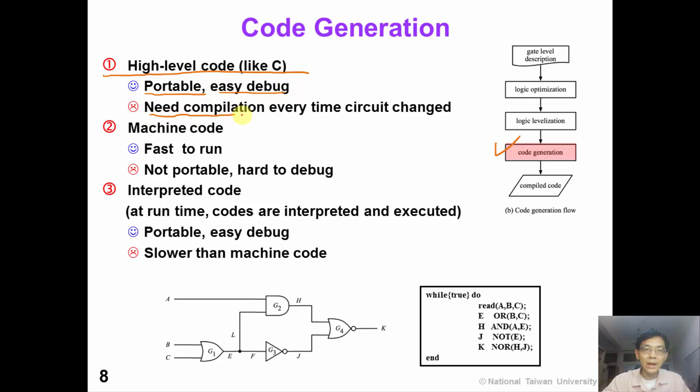However, the problem is that whenever we change the circuit, we need to redo the compilation. The second kind of code is machine code. It's very fast to run the machine code, but it's hard to debug. And it's not portable to other machines.